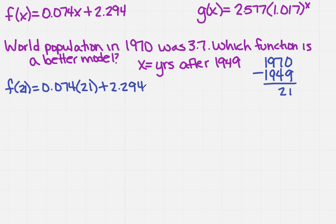And then I'm going to turn right around, and I'm also going to do g of 21 equals 2.577 times 1.017 to the 21.